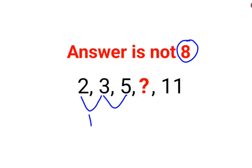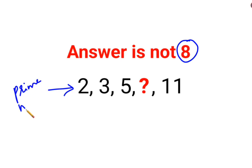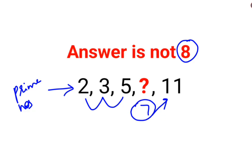So when you have something like this, it means there is some other logic which is at work. If you look at this entire series, all of these are basically prime numbers. If you look closely, 2, 3, 5 — and the next prime number which comes in the series is 7. After 7, the next prime number which comes is 11. So here we can say the value of the question mark is supposed to be just 7.